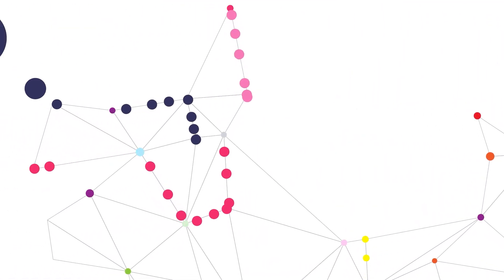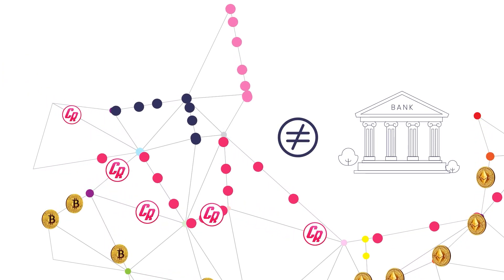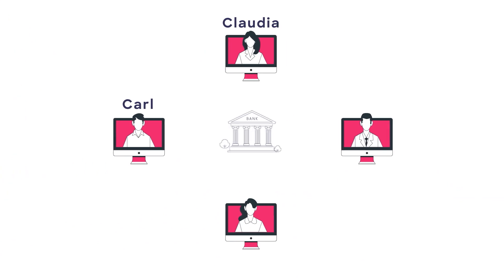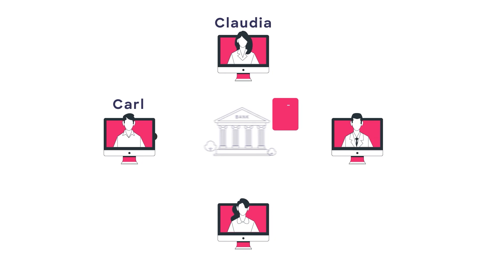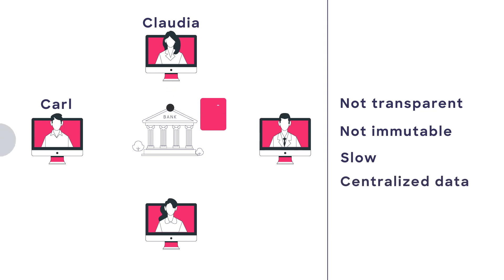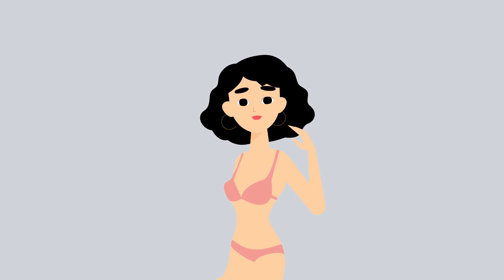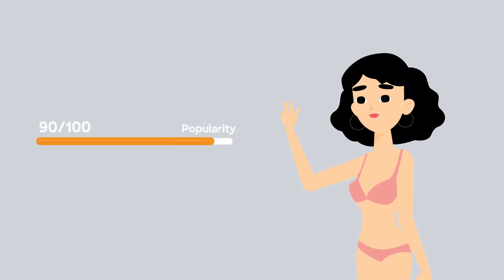Now that we understand how the blockchain works, let's take a minute to see its opposite: the current banking system. If Carl wants to send money to Claudia, the bank is the only one recording all the transactions and managing the system. As you can see, this is not transparent, it is not immutable, it is slow, and in terms of security, the system is very vulnerable as the data is centralized. Now that the advantages of the blockchain are clear, it's easy to see why there is growing popularity and value of cryptocurrency.